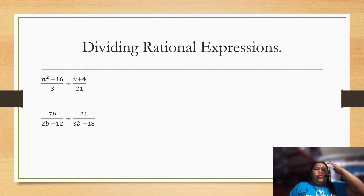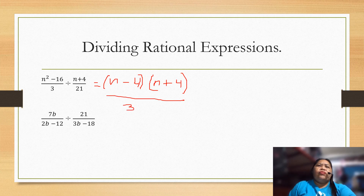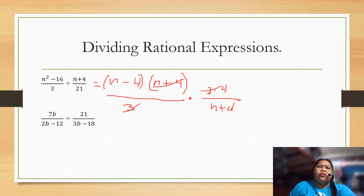Next: n-squared minus 4 over 3, divided by n plus 4 over 21. We factor n-squared minus 4 as (n plus 4)(n minus 4), over 3. Then we multiply by the reciprocal, 21 over n plus 4. Since 21 equals 3 times 7, we cancel the (n plus 4) terms and the 3s, giving us 7(n minus 4) as the final answer.